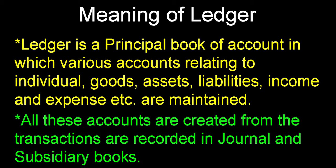Ledger is a second step after completing the general and subsidiary book. Ledger is a principal book of account because it is the main book of account — in this book, we prepare a separate ledger for each and every transaction which is recorded in the general or subsidiary books. We prepare various individual accounts, for living persons as well as artificial persons, so we have to prepare a separate ledger for the individuals.